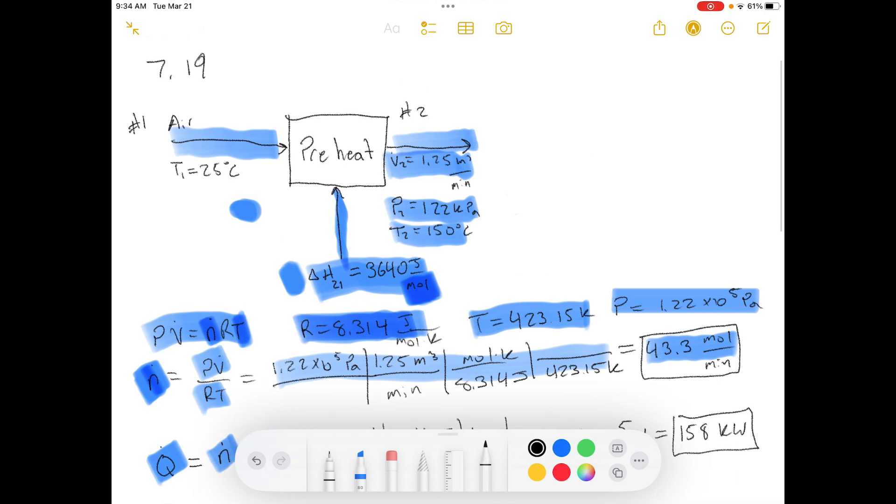To show this a little bit better, we'll write down our energy equation. Delta H plus delta EK plus delta EP equals Q minus shaft work. Well, we don't have any shaft work, and they told us to ignore these. So all we have is delta H equals Q.